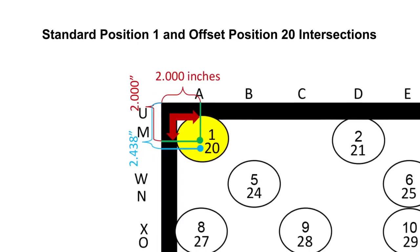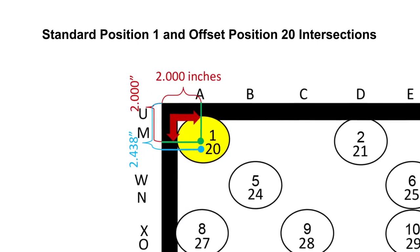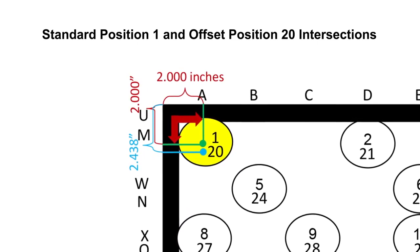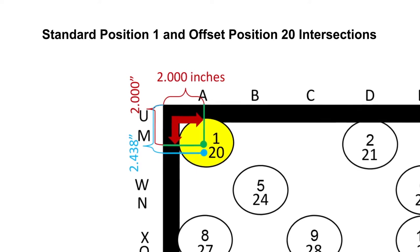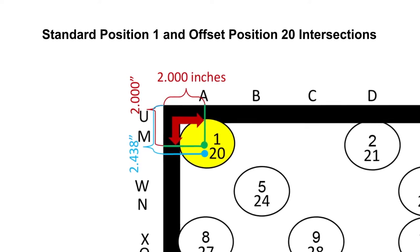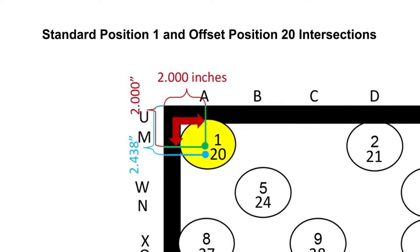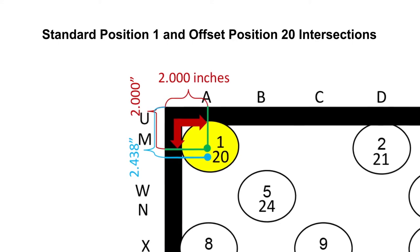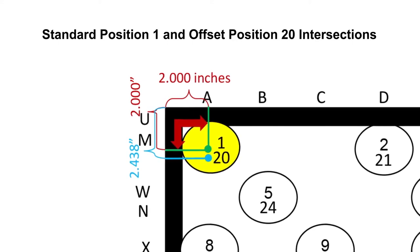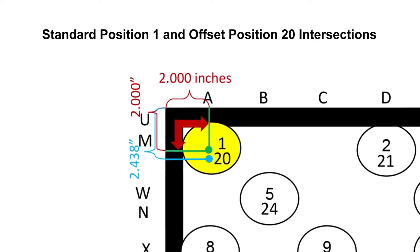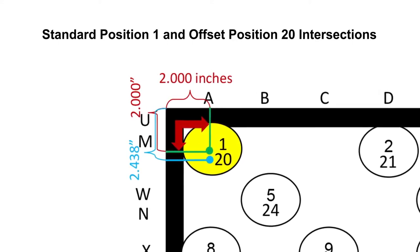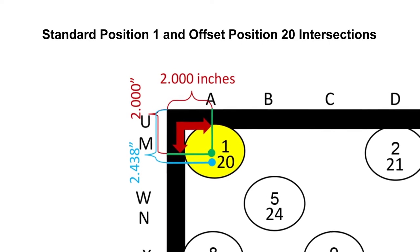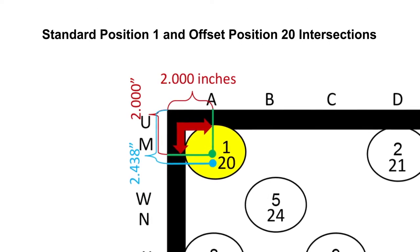Each position consists of a standard velocity reading location and an offset velocity reading location. Now that the position point intersections have been explained, next is to watch the video as an example of how to mark the demonstration coil and the position points 1 through 38.